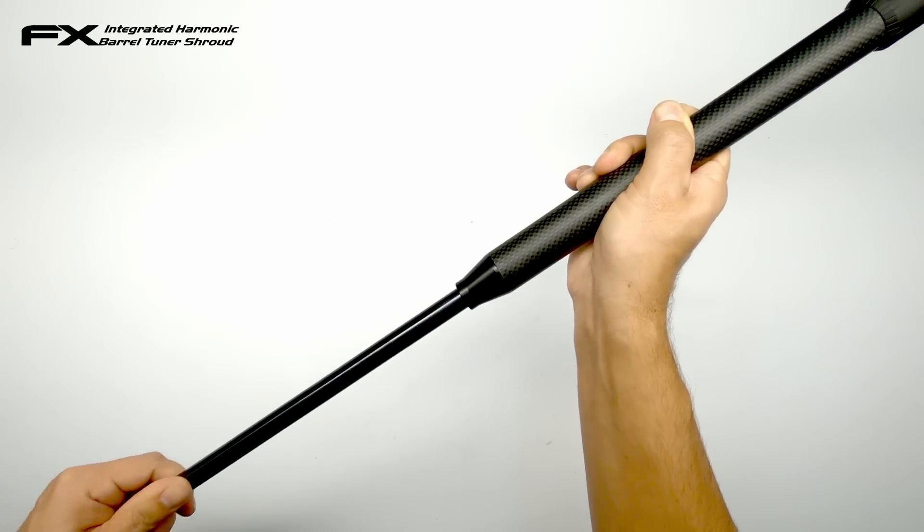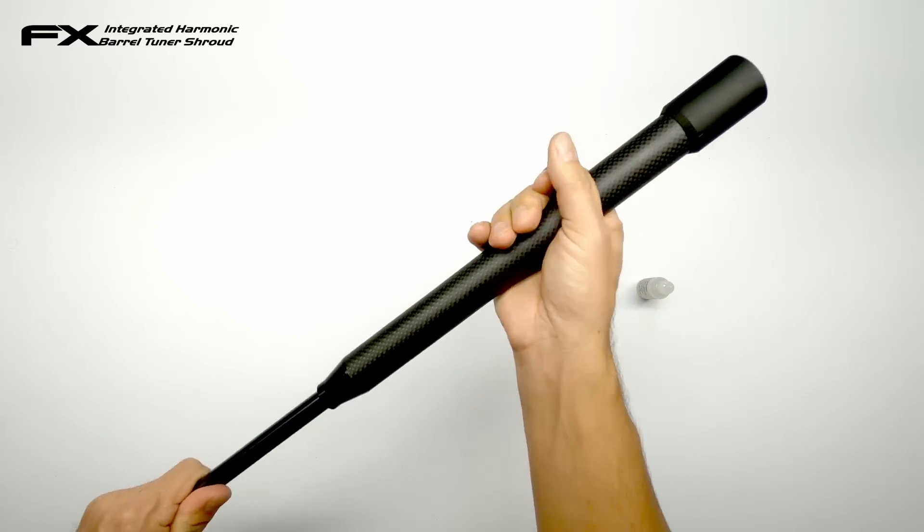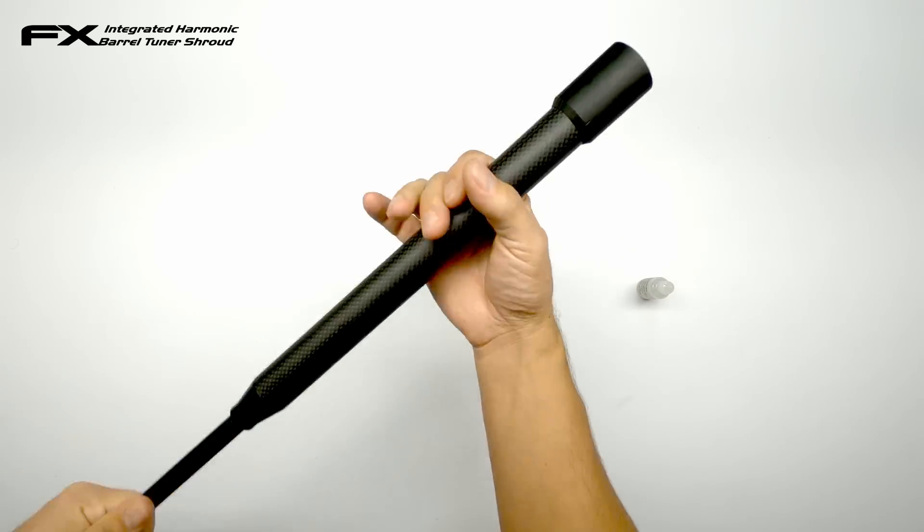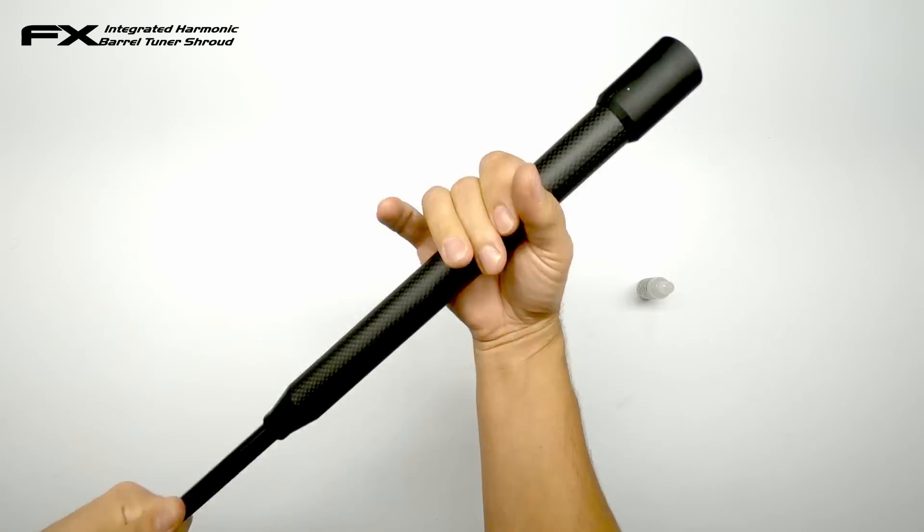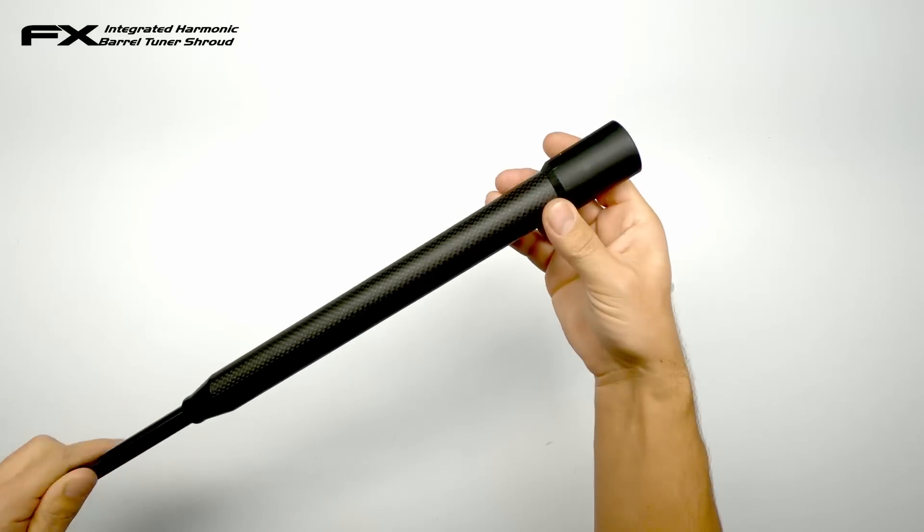So push it in. Gently slide it through, maybe in a twist motion. Once you're at the front screw it on like you would do with a normal shroud. Like so.